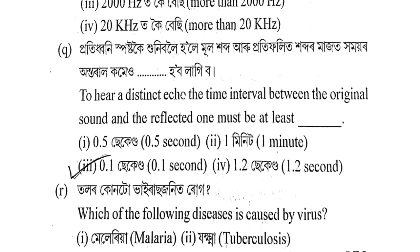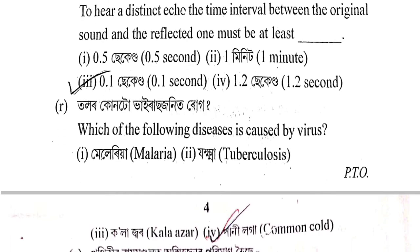Next question: Pratidhani spashto koi honibole hale mul habdo aru pratidhvalita habdoar mazar homoay antaral komeo dash habbo lagibo. To hear a distinct echo, the time interval between the original sound and the reflected one must be at least: 0.5 second, 1 minute, 0.1 second, or 1.2 seconds? The correct answer is option 3 — 0.1 second.